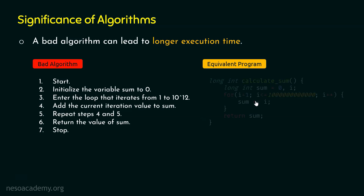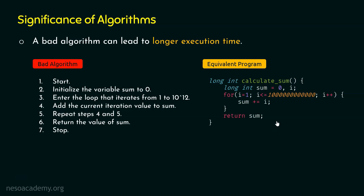Let's convert this algorithm to its equivalent program. Here we are writing the function calculate sum in C programming language. I assume you already know some programming language. Within this function, I have defined the variable sum and assigned value zero to it. This variable is long int because it will hold a very large value at the end. We are also defining variable i as long int type.